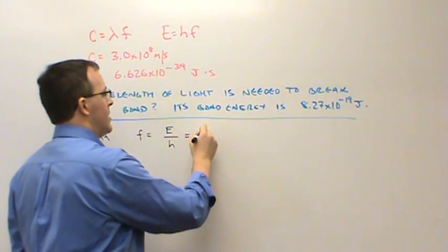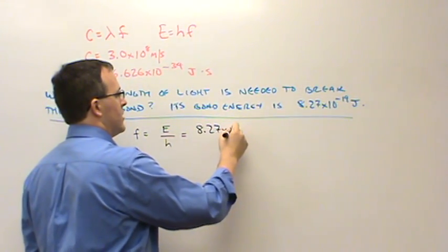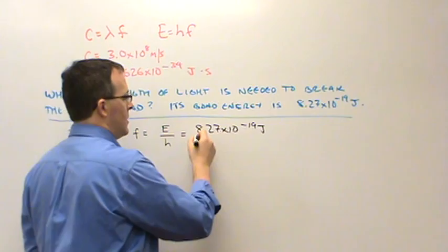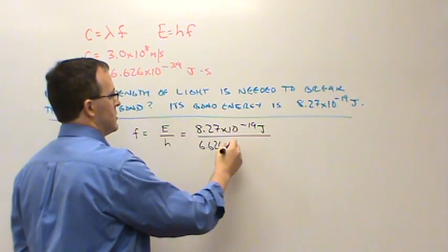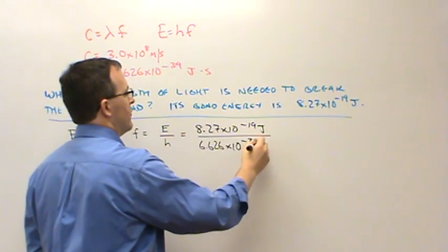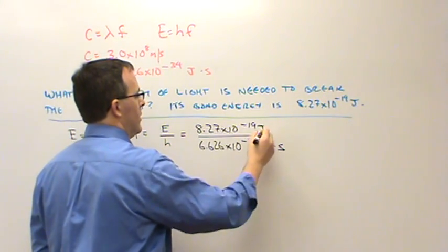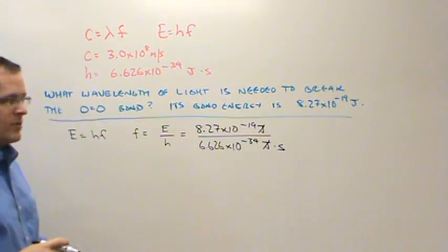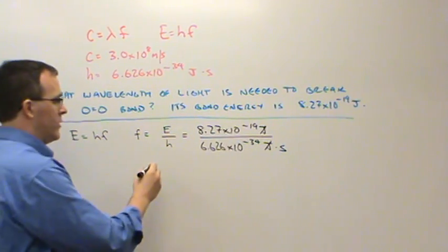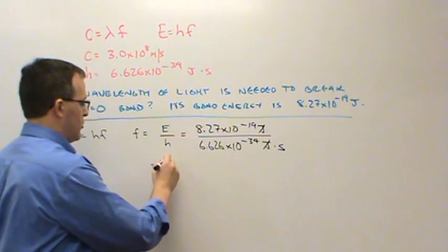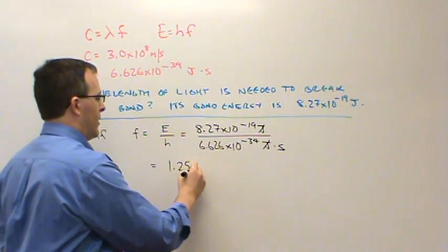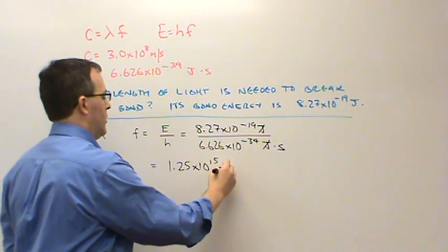So we're going to plug in those numbers. 8.27 times 10 to the minus 19 joules divided by Planck's constant, 6.626 times 10 to the minus 34 joule seconds. Cancel your joules, that's going to give us the unit of hertz, which is what we want. When you do that math, this comes out to about 1.25 times 10 to the 15th hertz.